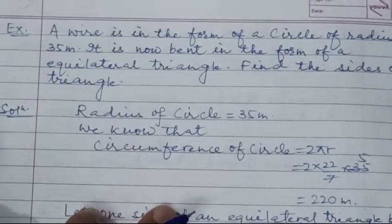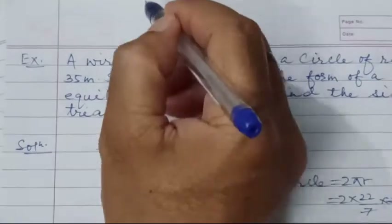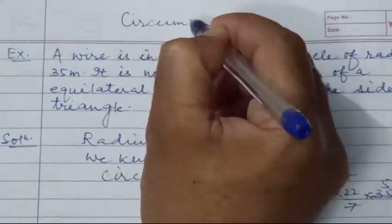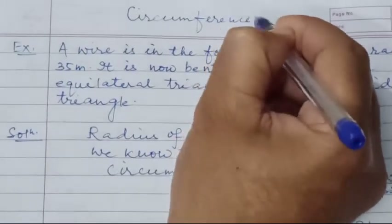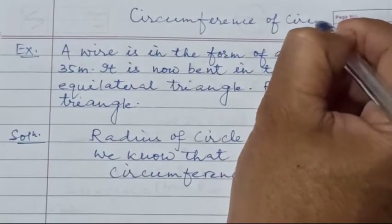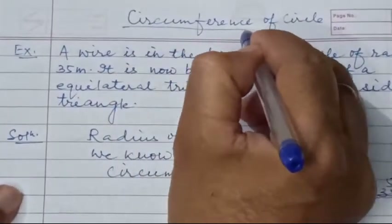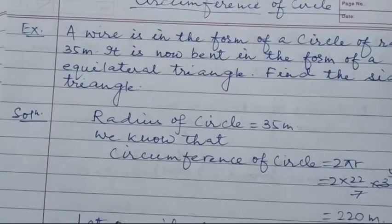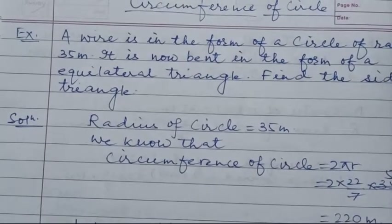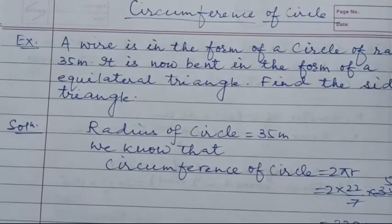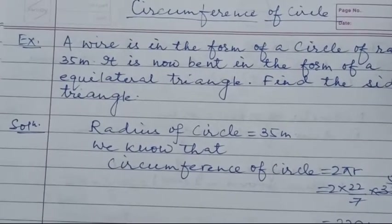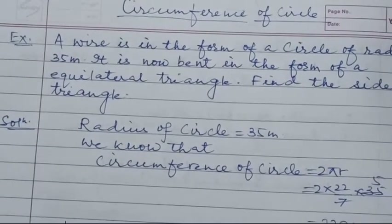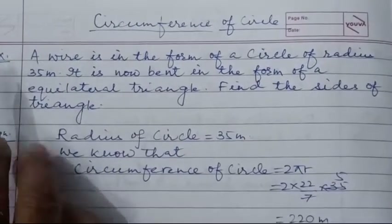Good morning students. Today again I am going to continue the chapter on circumference of circle. Previously I discussed worksheet 5 which is related to circumference of circle, and today I will discuss the remaining questions. First we will solve one example.